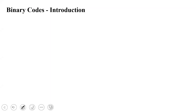We are using decimal number systems, but computers use zeroes and ones. If we use a decimal number, it needs to be converted to binary — the same language computers understand. To make this conversion easier, certain codes are created. If we use these codes, we can easily convert decimal numbers.